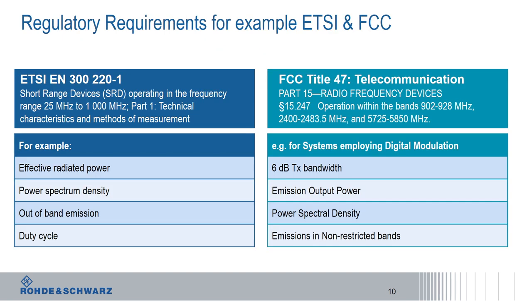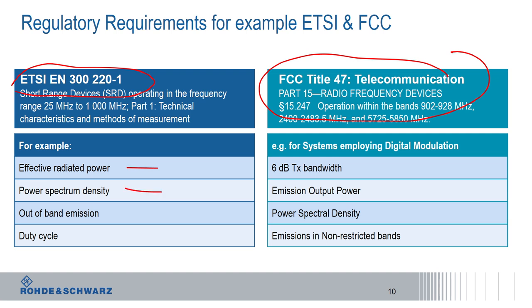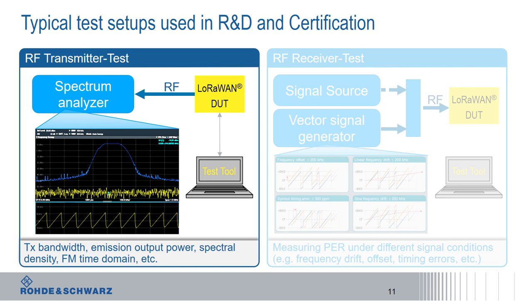For regulatory requirements, ETSI defines standards for the EU and FCC for the North American market. Typical TX measurements include effective radiated power, power spectral density, out-of-band emissions, and duty cycle compliance. In R&D, you typically connect your LoRaWAN DUT via RF cable or over the air to a spectrum analyzer, using a testing tool to control the DUT and perform various signal measurements.